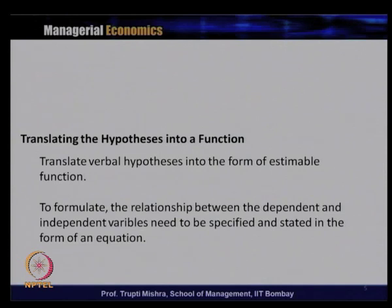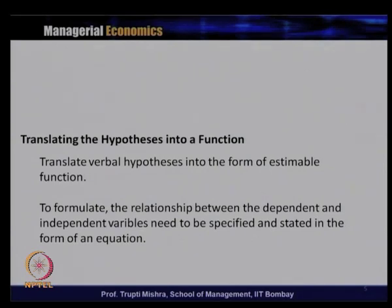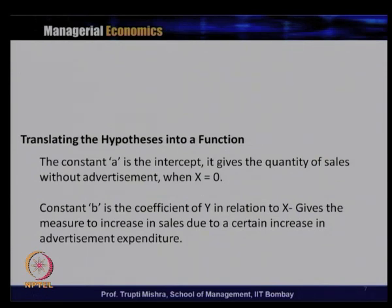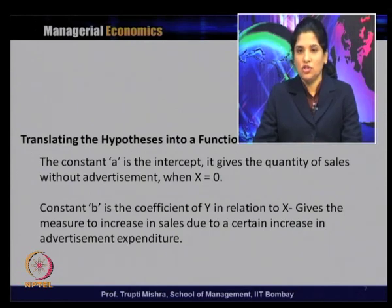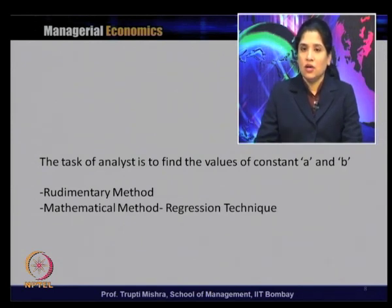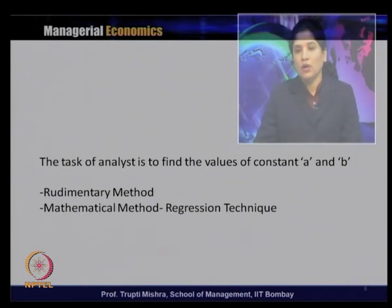After translating the hypothesis into the function, the relationship between the dependent and independent variable needs to be specified and stated in the form of an equation. In the equation, a is the intercept — it gives the quantity of sales without advertisement when x = 0 — and b is the coefficient of y in relation to x, giving the measure of increase in sales due to a certain increase in advertisement expenditure. The task of analysis is to find the value of the constants a and b, where a is the intercept and b is the slope, because on the basis of these values we will know the relationship between the dependent and independent variable.